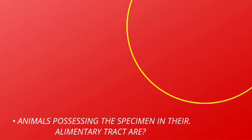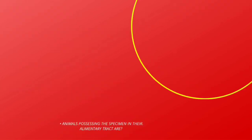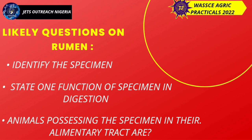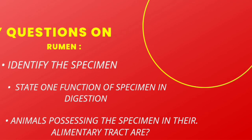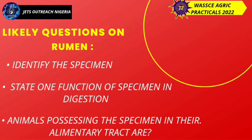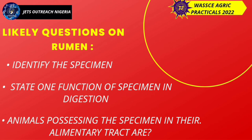Next is the rumen. Likely questions: identify the specimen, state one function of the specimen in digestion, name animals possessing the specimen in the alimentary tract. Your answers: fermentation occurs in the rumen, and ruminants are animals with a rumen.